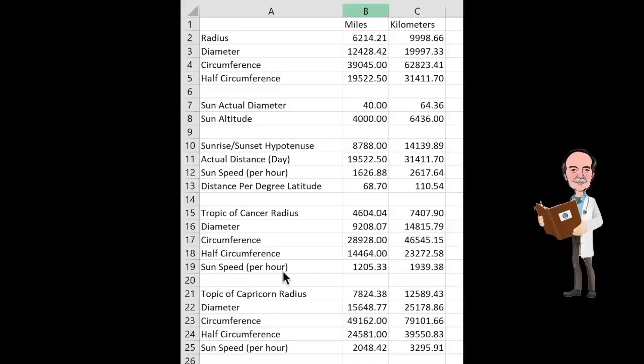Now, there's a couple of interesting things about the sun speed here. First of all, when the sun is following the Tropic of Cancer in the Northern Hemisphere, its hourly speed is going to be 1,205 miles an hour. However, to keep up with the 15 degrees per hour drift down at the Tropic of Capricorn, it's got to speed up to over 2,000 miles an hour. I would very much like to know what speeds the sun up from 1,200 miles an hour to 2,000 miles an hour.